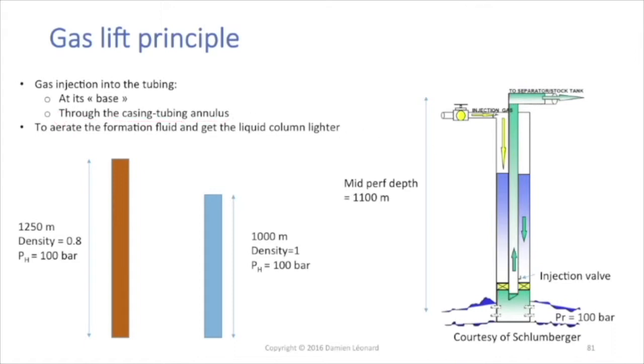As we can see on that drawing, we've got the casing tubing annulus in that area, and we're going to inject gas there. It's going to get into the tubing using that injection valve at the deepest points.